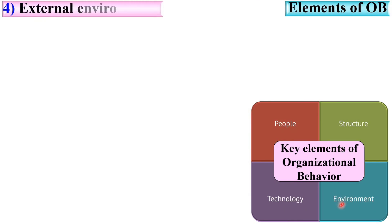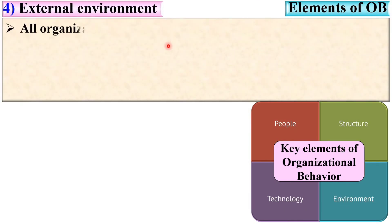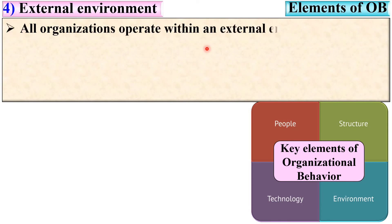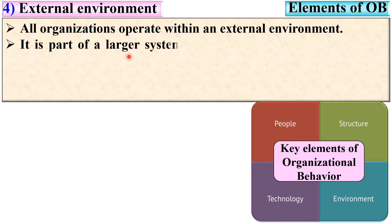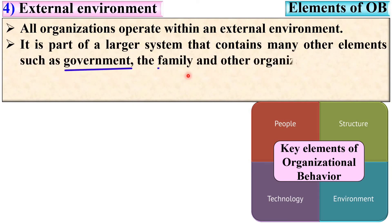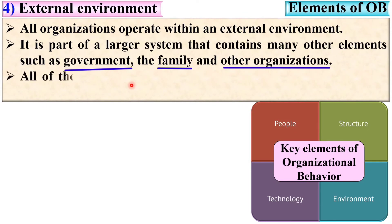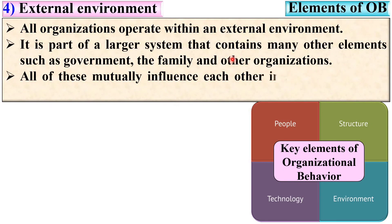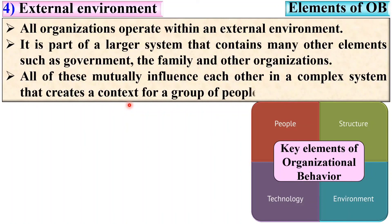The last key element is environment, or simply the external environment. All organizations operate within an external environment. It is part of a larger system that contains many other elements such as government, the family, and other organizations. All of these mutually influence each other in a complex system that creates a context for a group of people.